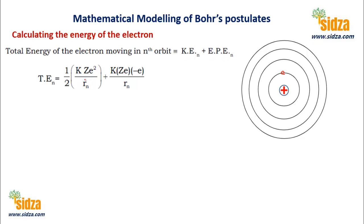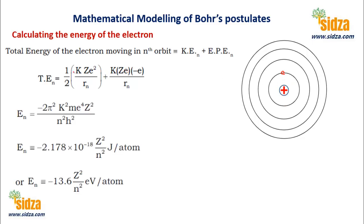When you substitute the values, the total energy of an electron in a particular orbit is the kinetic energy plus the potential energy. This is the kinetic energy equation and this is the potential energy. When you simplify, we finally get: energy of an electron equals negative 2π²k²me⁴Z²/n²h².